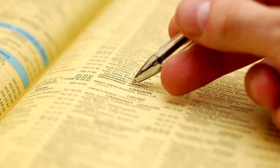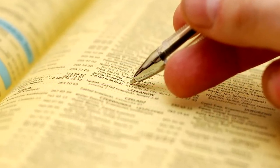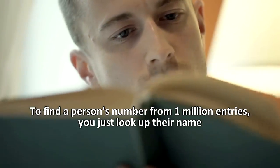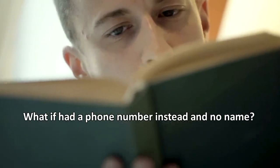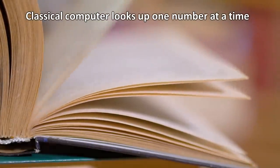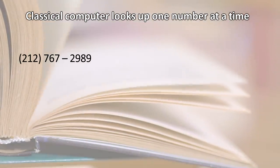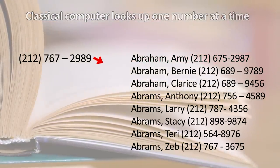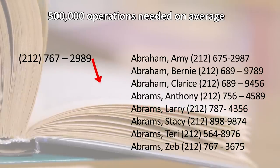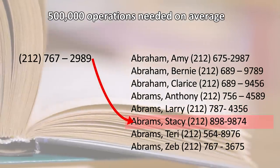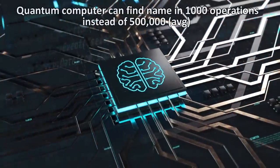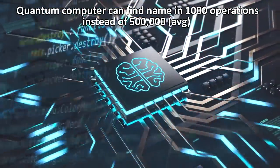So for example, if you wanted to find a person's phone number in a phone book containing a million entries, it's not a problem. You would just look up their name in alphabetical order. But what if you had the inverse problem? You had a phone number and you were trying to find the name that it belongs to. A classical computer would have to look up one number at a time, on average 500,000 numbers, or 500,000 operations, before it found the correct name. However, if the phone book data was on a quantum computer, it could find the name in a thousand operations.